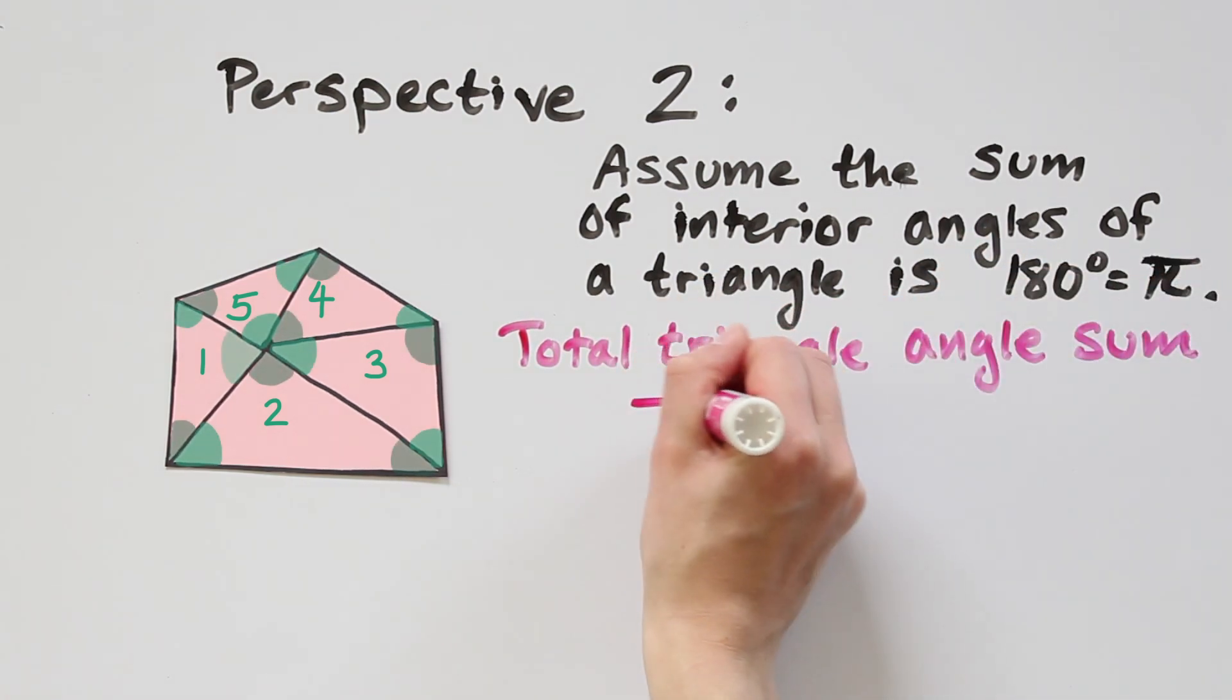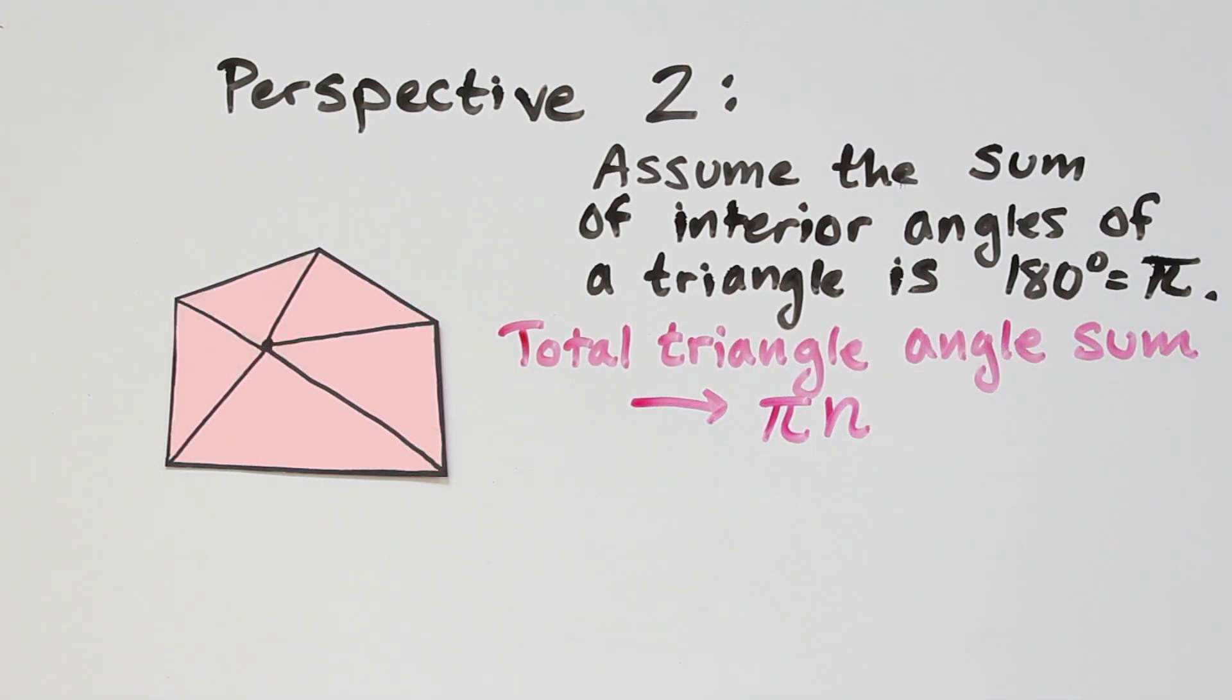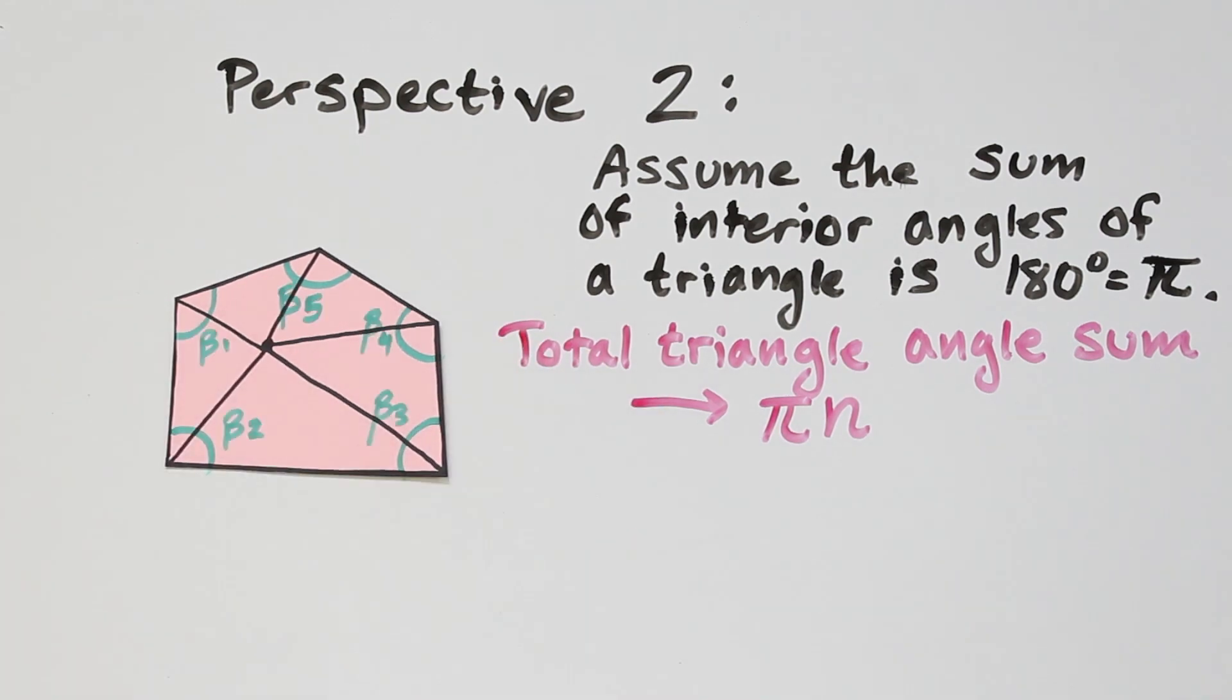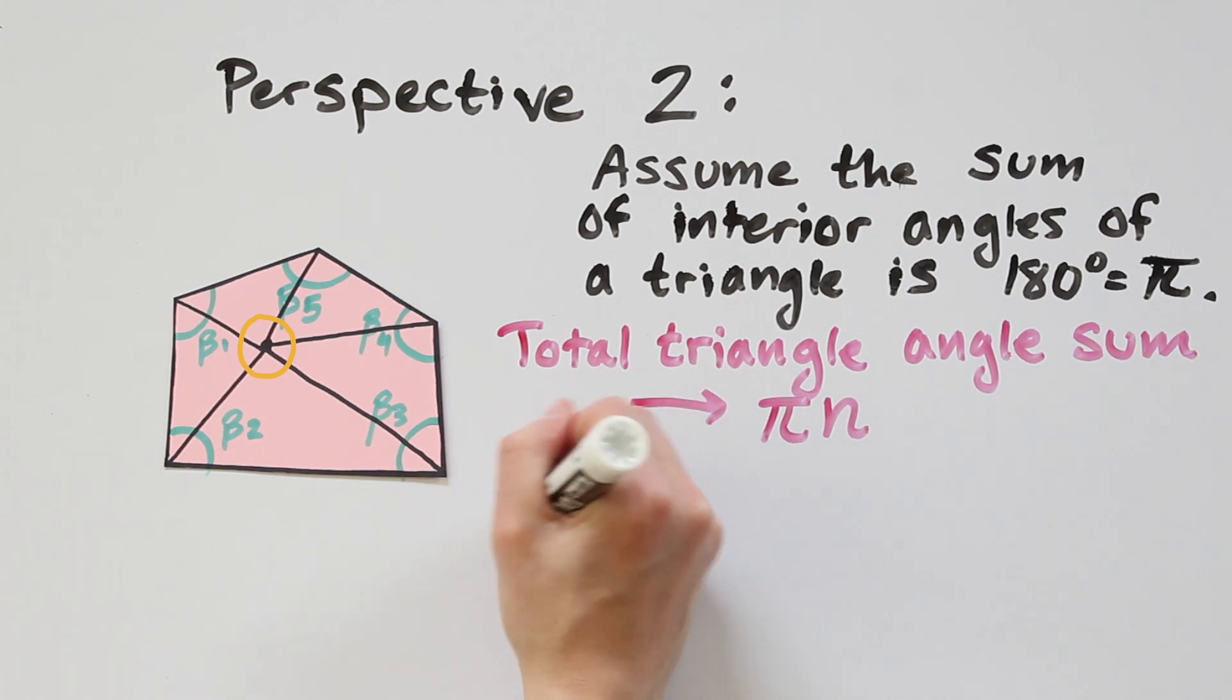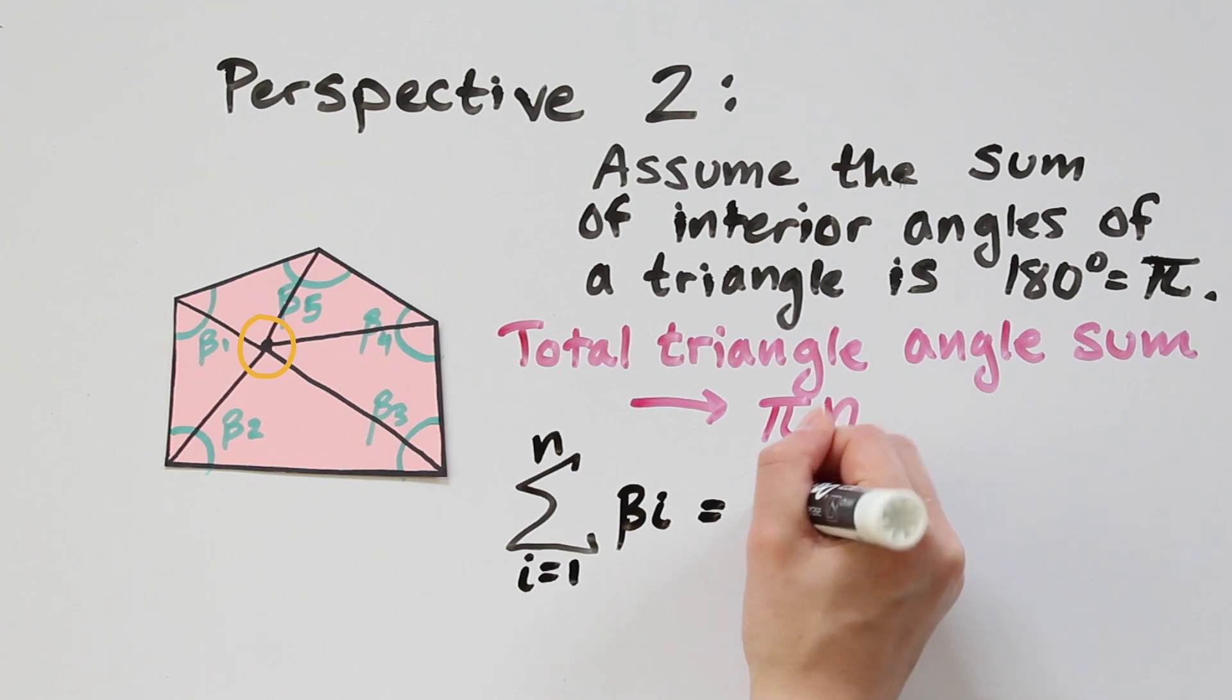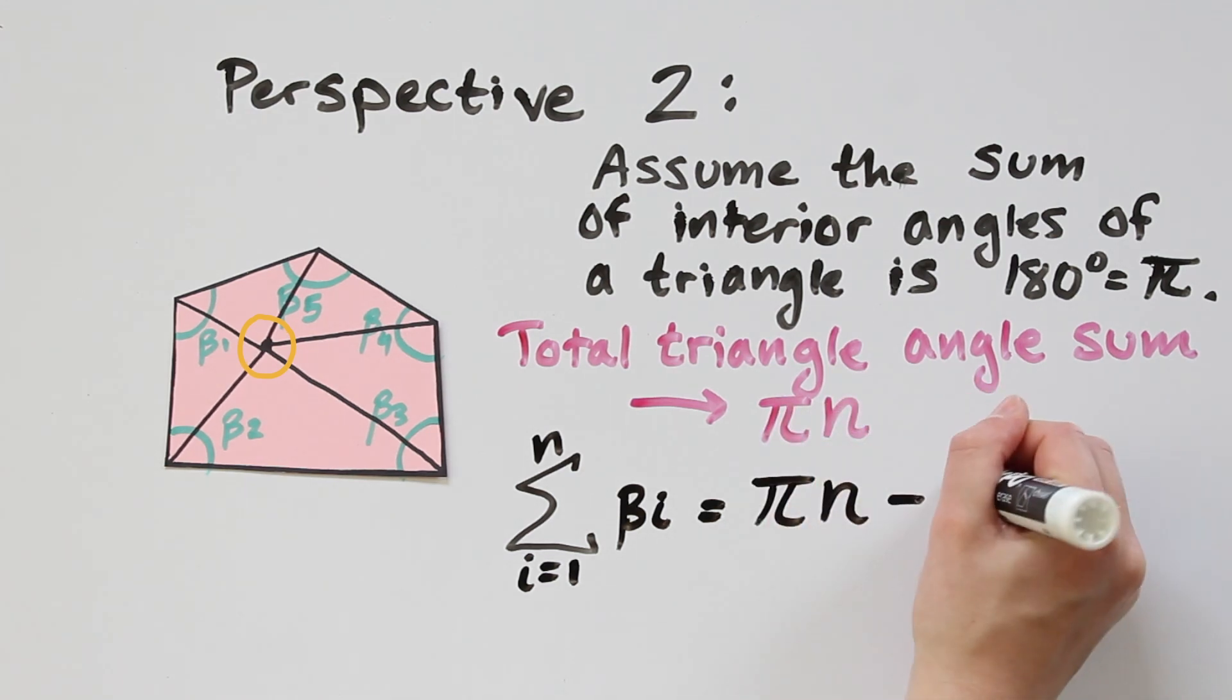These are all of the green angles shown. Now we label the angles of the polygon, beta 1 up to beta n. The total triangle angle sum includes these plus the angle at the center point. So the sum of the interior angles of the polygon, the sum of the beta i, is pi times n minus 2 pi.